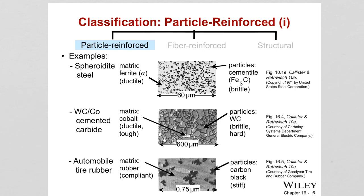In large particle reinforced composites, the particulate phase is usually harder and stiffer. Particles restrain the movement of the matrix phase in the vicinity of each particle. The matrix transfers applied stress to the particle. The degree of improvement in properties depends on the bonding strength at the matrix-particle interface. Particles with approximately the same dimensions in all directions give uniform enhancement of properties. They should be small and evenly distributed for effective reinforcement.